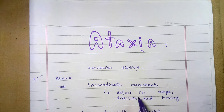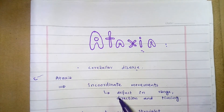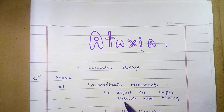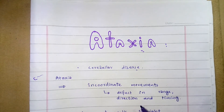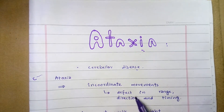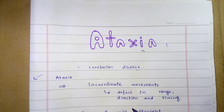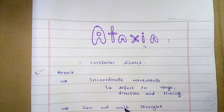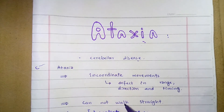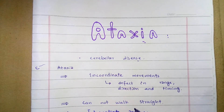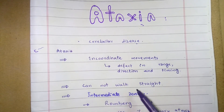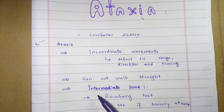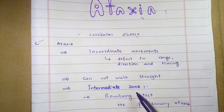Ataxia is the incoordinate movement which occurs due to defects in the range, rate, direction, and timing of movements. A person with ataxia cannot walk in a straight line — they walk in a zigzag manner. This is because of an issue with the intermediate zone of the cerebellum.